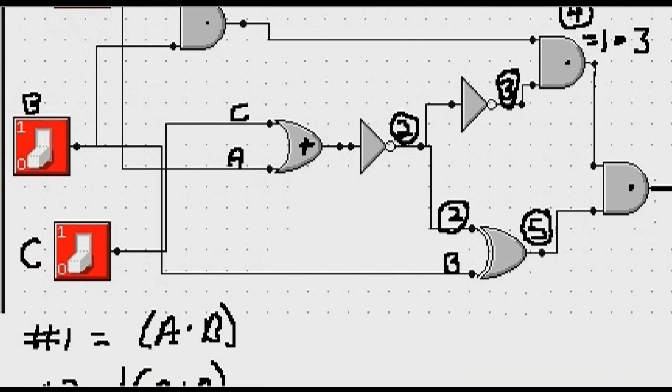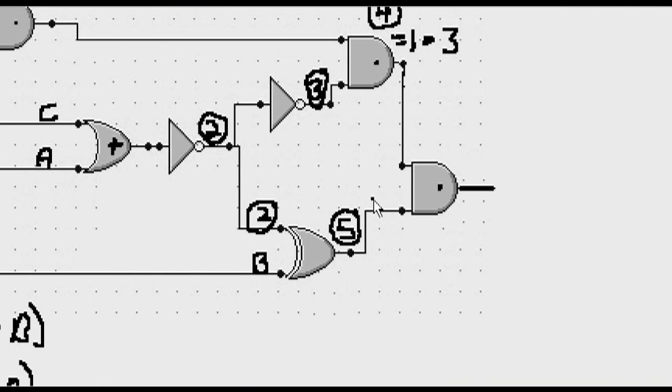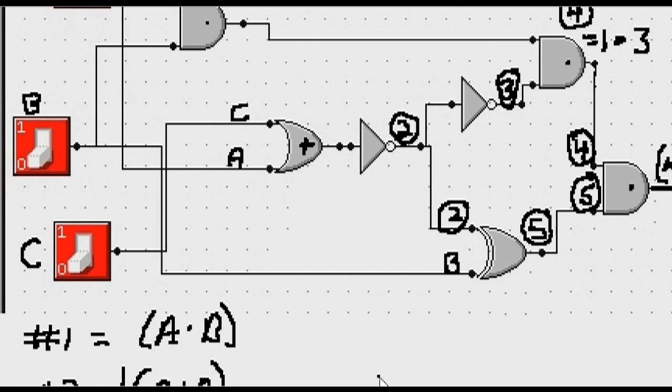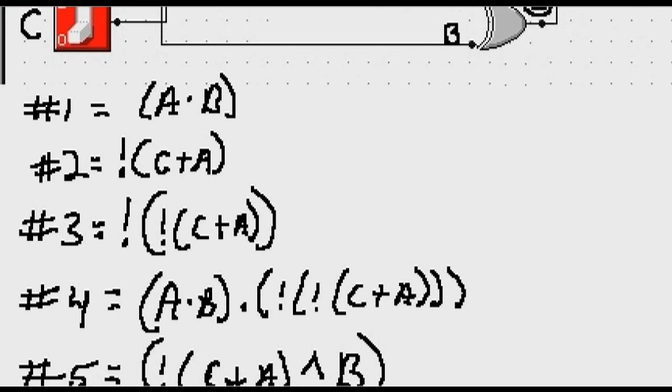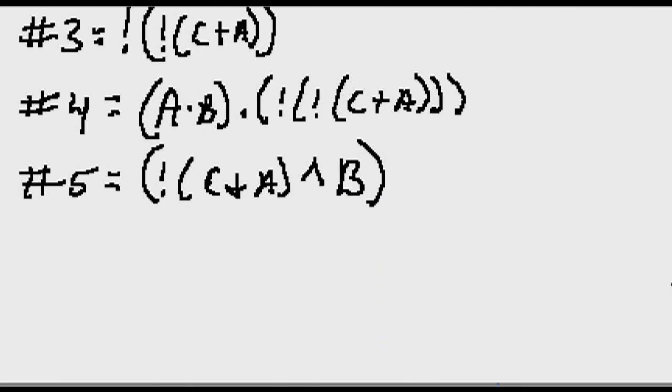And now what do I have? I've got two inputs here. Four and five being ANDed together. So this is four ANDed with five. That's my final output. My final Boolean expression is four ANDed with five. Wow. That could be a mouthful here. So this guy ANDed with this guy. Let's see if we can do that.